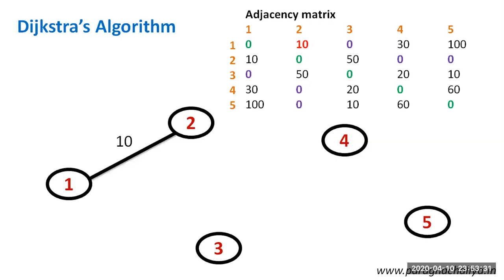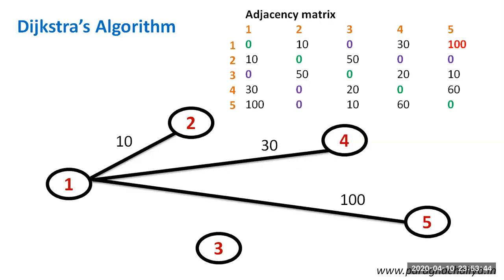The second edge will be between node 1 and node 4 having distance 30. The next edge will be from 1 to 5 with distance 100. This is starting from node 1 to other nodes.